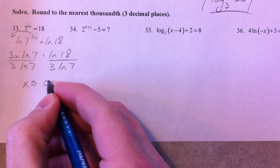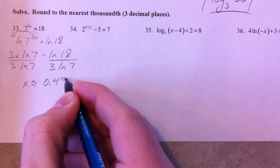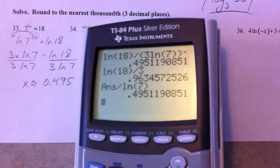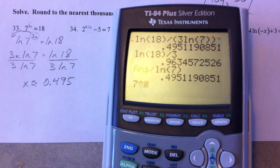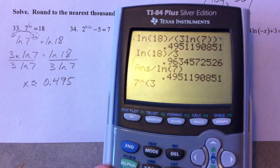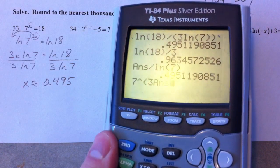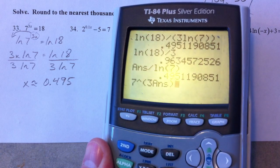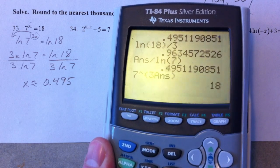So, 0.495. Keep in mind, you can always check your answer, too. 7 to the power of 3 times—I'm going to type in answer—that's 3 times my answer. That's equal to 18, which I had. So, next problem.